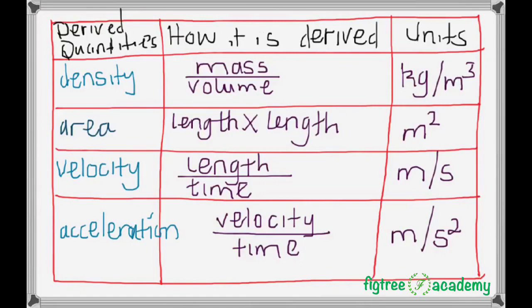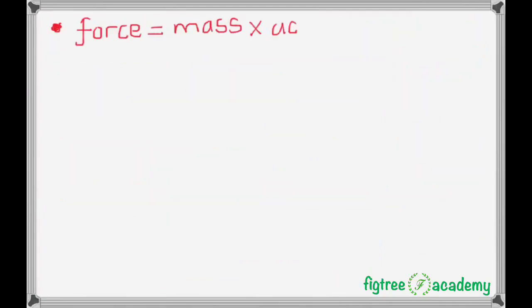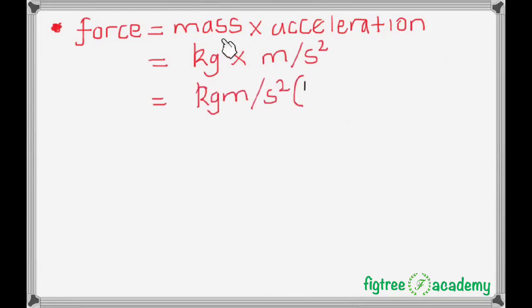Now, some units of derived quantities are given special names. For example, force has a formula mass times acceleration, and we expect its units to be kg meters per second squared. However, these units are given a special name, which is Newtons, and is abbreviated N.